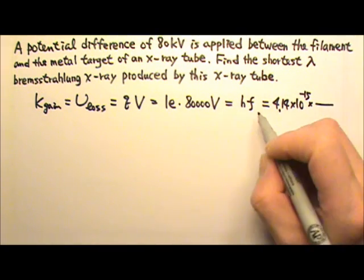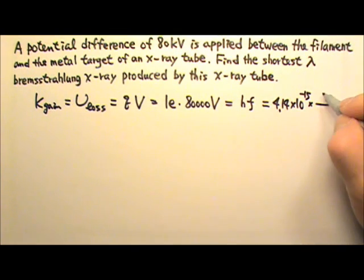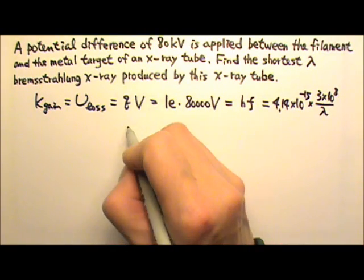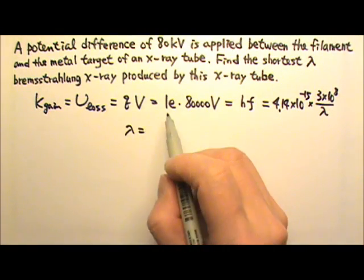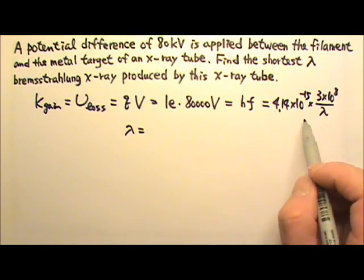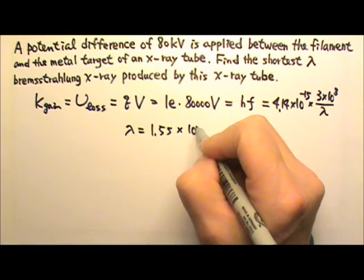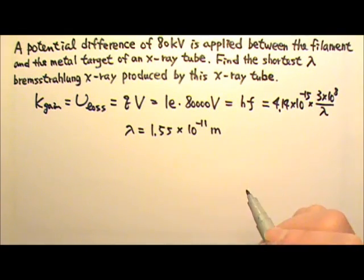F is C over lambda. C is 3 times 10 to the eighth divided by the wavelength we're looking for. So we can solve for the wavelength because 80,000 equals to that, and wavelength will be 1.55 times 10 to the negative eleventh meters.